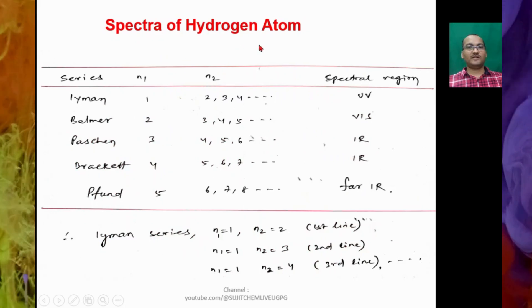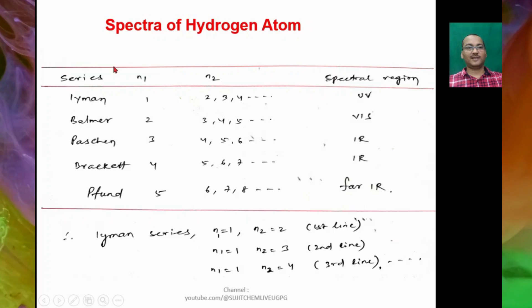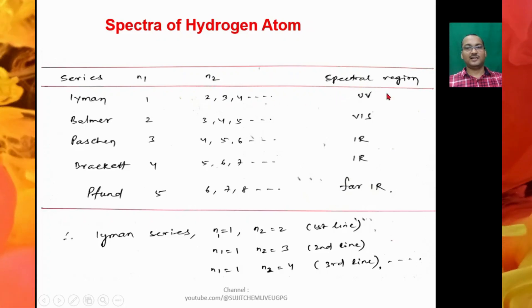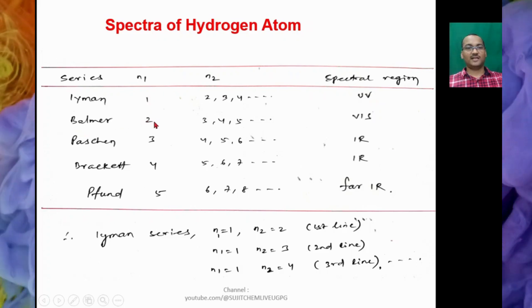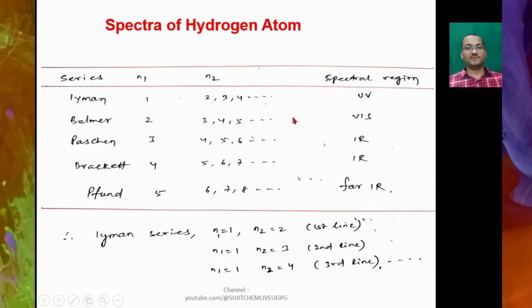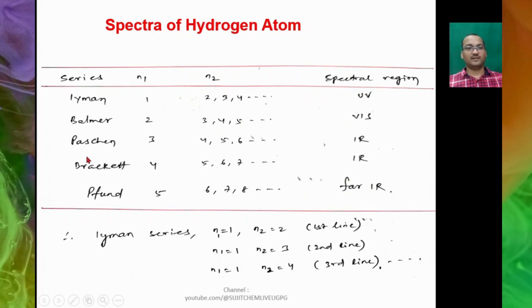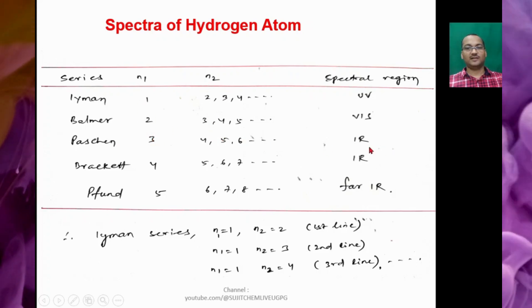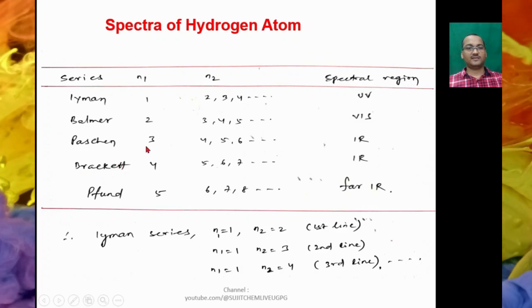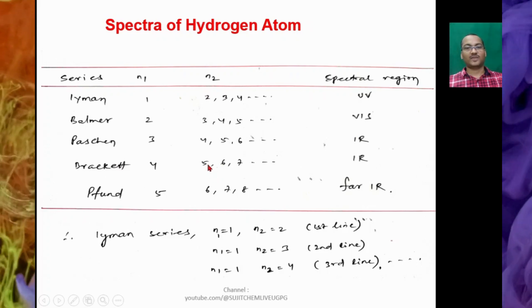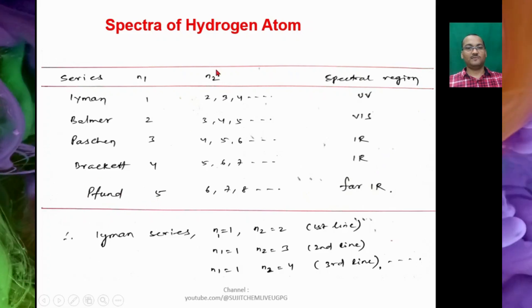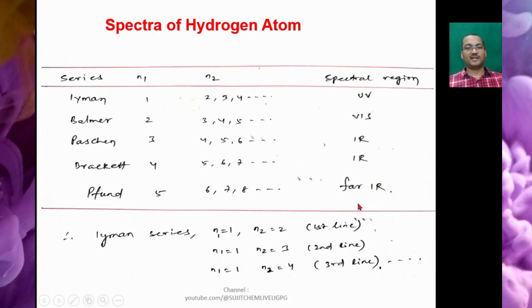So here is the spectra of hydrogen atom and we got several series of lines. For Lyman series, N₁ = 1 and N₂ = 2, 3, 4, etc., and the spectral region is UV. Similarly for Balmer series, N₁ = 2, N₂ = 3, 4, 5, etc., and it is in visible region. Then Paschen series, N₁ = 3, N₂ = 4, 5, 6, and it is in IR region. Then Brackett series, N₁ = 4, N₂ = 5, 6, 7, etc., and it is in IR region. Then Pfund series, N₁ = 5, N₂ = 6, 7, 8, and it is in far IR region.